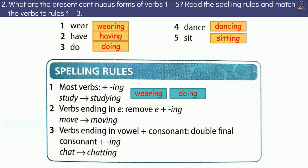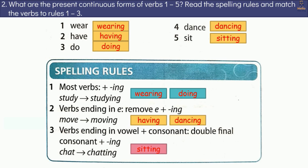Spelling rules: 1. For most verbs, we add -ing. Example: Study → Studying, Wear → Wearing, Do → Doing. 2. For verbs ending in e, we remove e and add -ing. Example: Move → Moving, Have → Having, Dance → Dancing. 3. For verbs ending in vowel plus consonant, we double the final consonant and add -ing. Example: Chat → Chatting, Sit → Sitting.